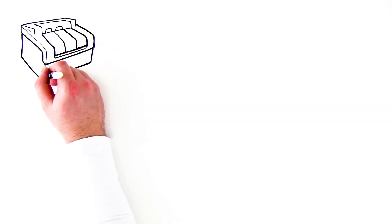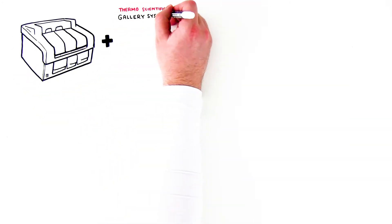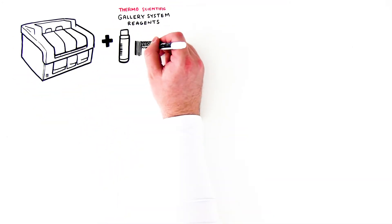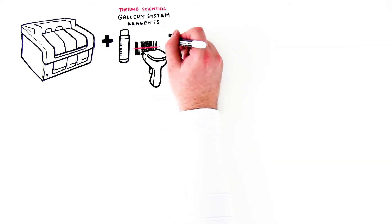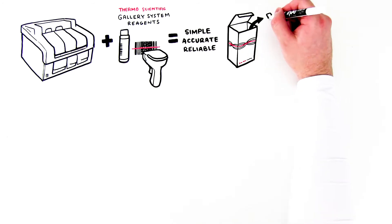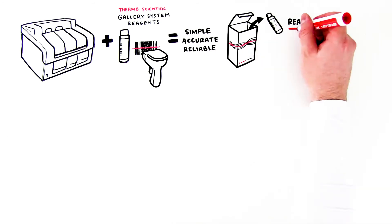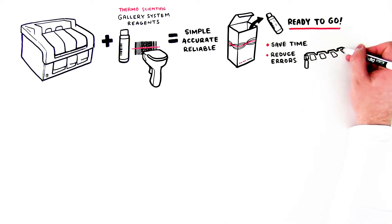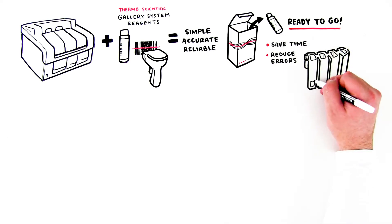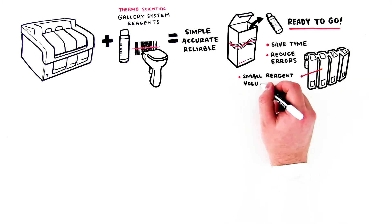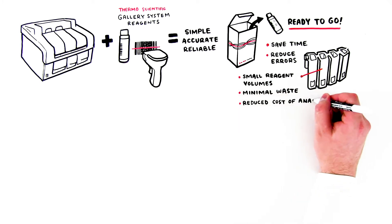Thermo Scientific Gallery Discrete Analyzers, together with ready-to-use system reagents, make the overall wet chemical analysis simple, accurate, and reliable. Thermo Scientific system reagents are ready to go, saving the technicians time and reducing errors. And the unique low-volume cuvette design guarantees small reagent volumes, minimizes reagent waste, and as a result, reduces analysis cost.